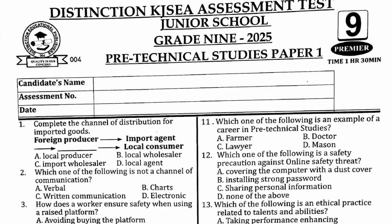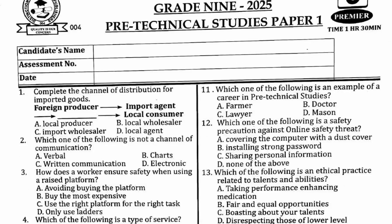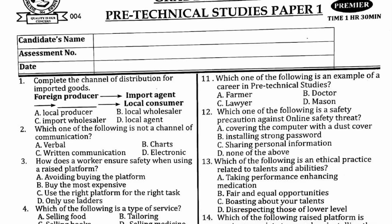Question number one says: complete the channel of distribution for imported goods. These are goods imported from outside our country. We have foreign producer, then import agent, then a blank, then local consumer. From import agent, we have local wholesalers, and from local wholesalers we have the local consumers. So the correct answer for number one is local wholesalers.